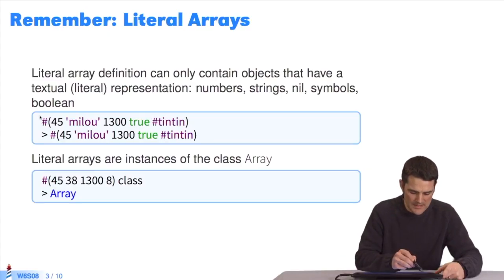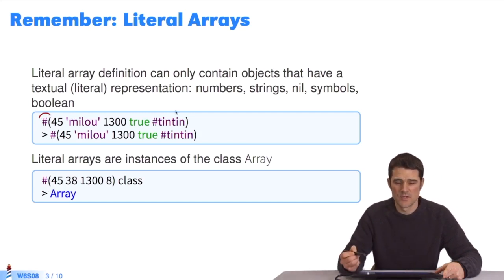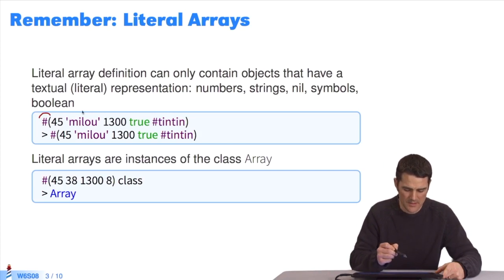If you remember, to create a literal array we use the syntax hashtag parentheses and in the middle I can put any object in textual form. In this case the integer 45, the string milou, the number 1300, the boolean true and the symbol hashtag tintin. If I ask this literal object for its class, the return value is an instance of array.